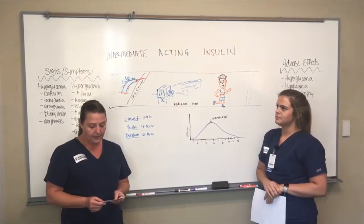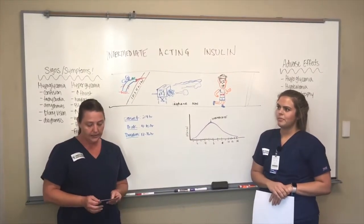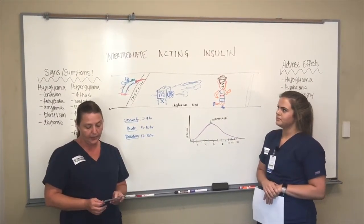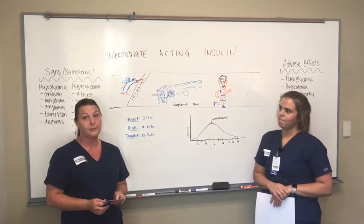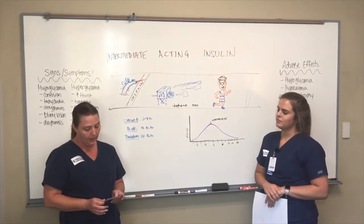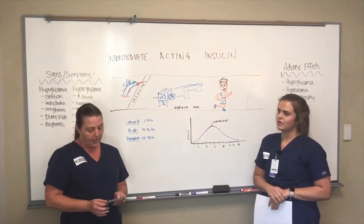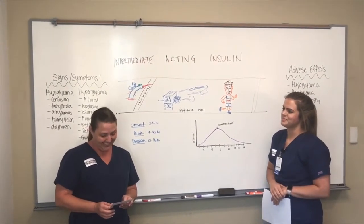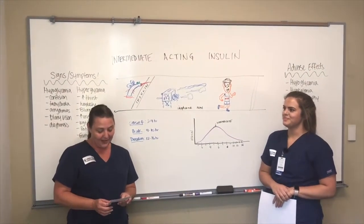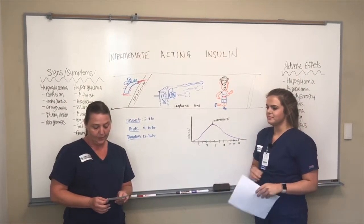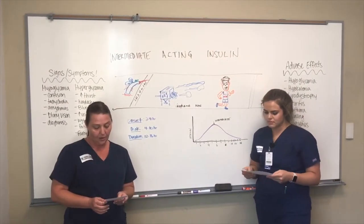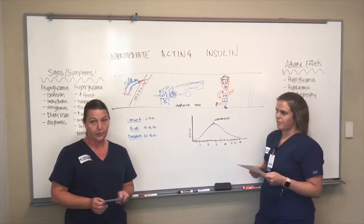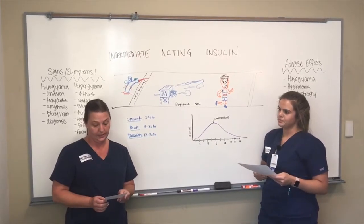It's used as a basal background insulin to maintain blood glucose levels in between meals and overnight. It contains protamine, which is what makes it look cloudy, and also makes it a suspension formula instead of a solution. This is also why it has to be mixed before being drawn up. When drawing up insulin, always draw regular first. The dose is 0.5 to 1 units per kilogram per day.